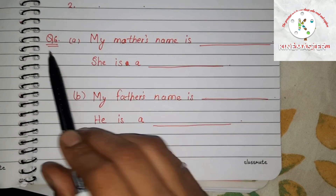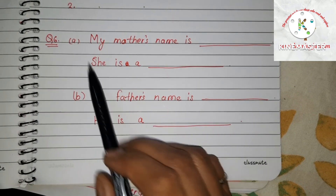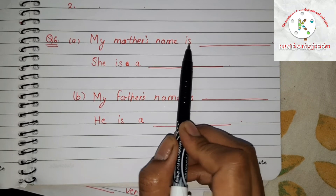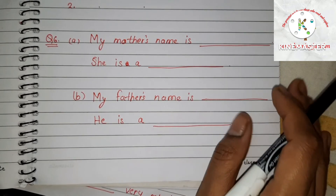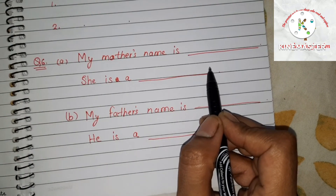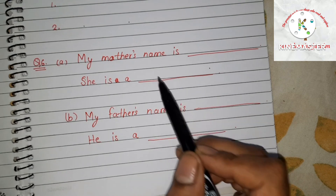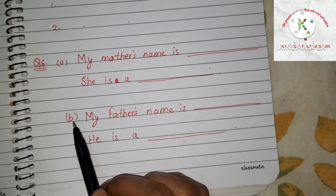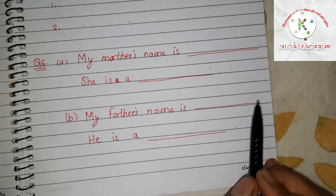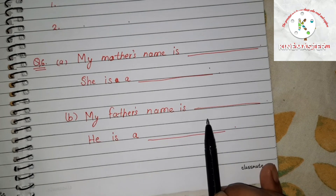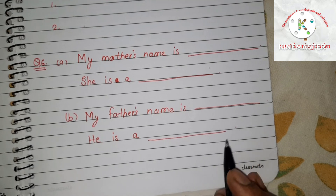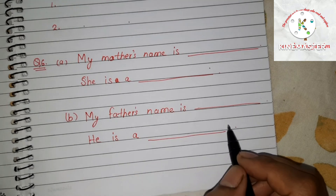Question number 6 has two parts, A and B. Part A: 'My mother's name is,' where the child has to write his mother's name, and 'She is a,' to write the mother's occupation — homemaker, teacher, or doctor. Part B: 'My father's name is,' and 'He is a,' for the father's occupation — it can be a doctor, engineer, CA, shopkeeper, whatever his father is.